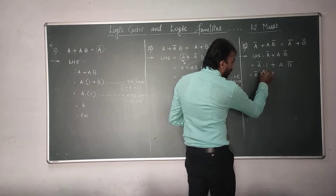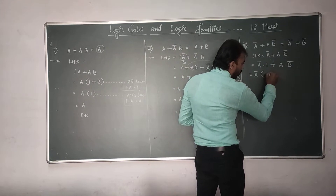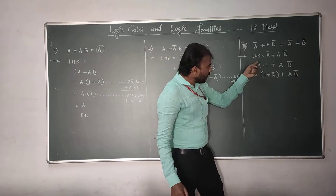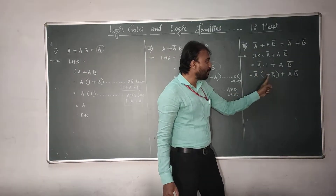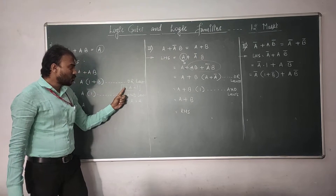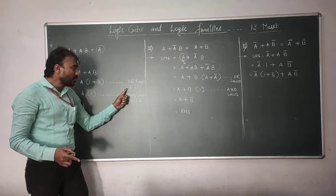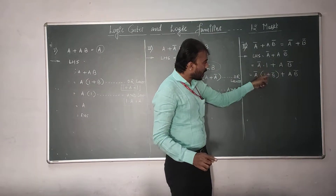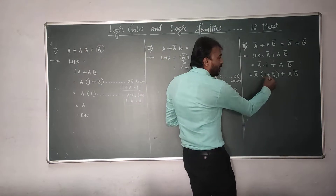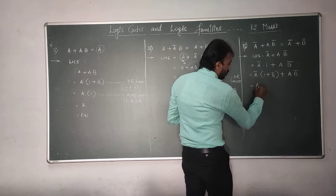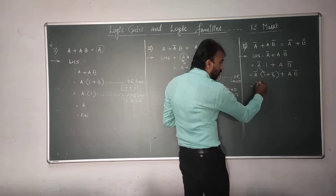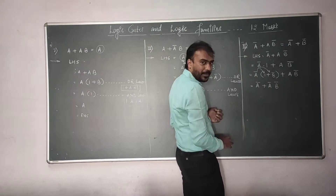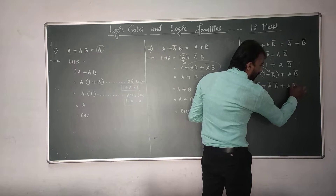Next, instead of 1, I write 1 plus B complement, because we discussed that 1 plus A is always 1 — so 1 plus B complement is also 1, and this is valid according to Boolean laws. I then expand the bracket: A complement multiplied by 1 gives A complement, and A complement multiplied by B complement gives A complement B complement, plus AB complement as it is.